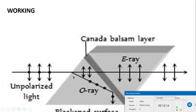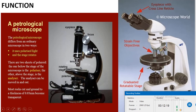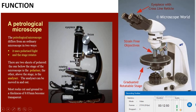This is the working and principle of the Nicol prism. The Nicol prism is used as a polarizer and analyzer in a petrological microscope. In a petrological microscope, two Nicols are used: one is the polarizer, also known as the lower Nicol, and the other is the analyzer, also known as the upper Nicol.